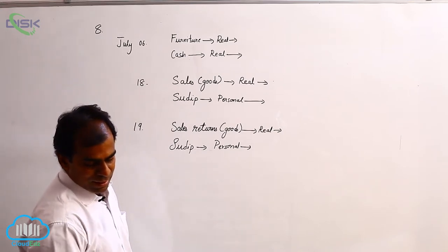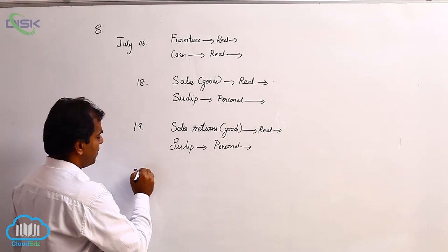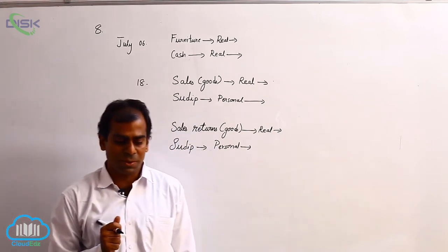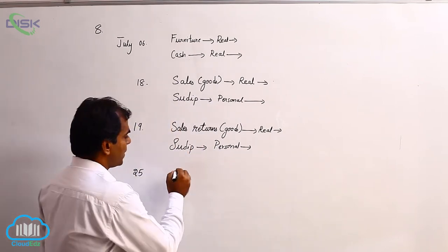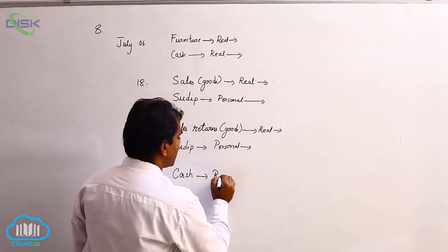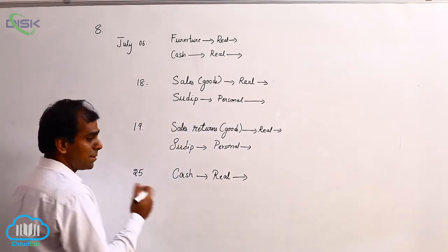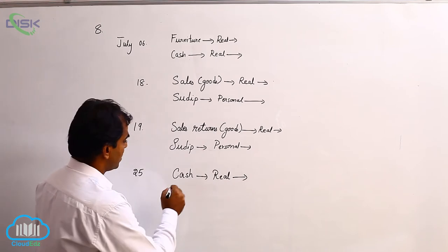Now the next transaction is on 25th. It states that cash received from Sudip. Cash received from Sudip. So cash is one account. So therefore cash is nothing but real account. Received means you see whether cash is coming in or going out and apply the rule.